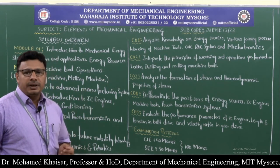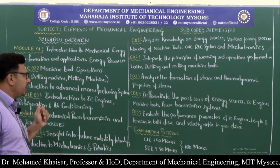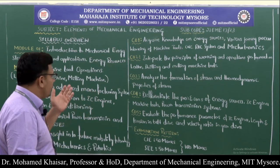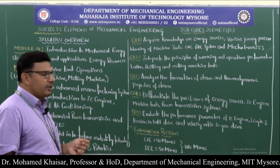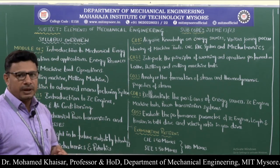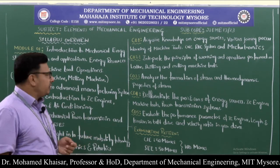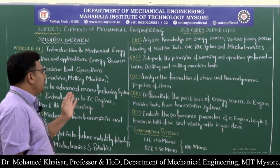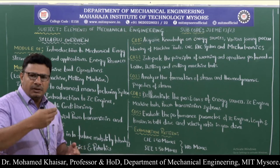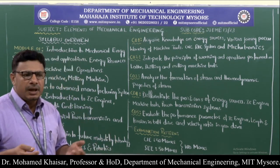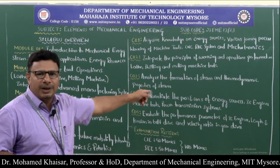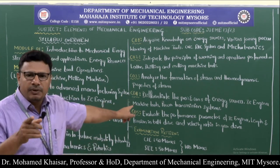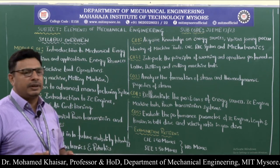The first course outcome: the learner will have acquired knowledge on energy sources, various joining processes, working of machine tools, CNC, refrigeration and air conditioning systems, and mechatronics. The second outcome: the learner will be able to interpret the principles of working and operations performed on lathe, drilling, and milling machine tools — for example, knowing that to make or modify a hole, a drilling machine is the appropriate tool, not a lathe or milling machine.